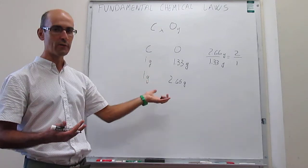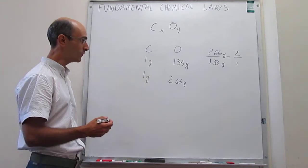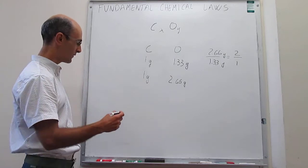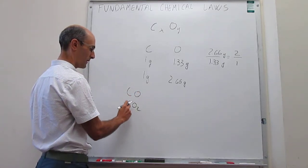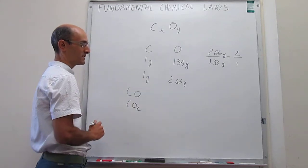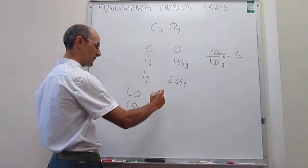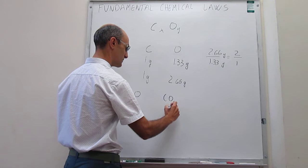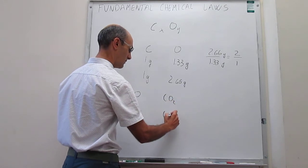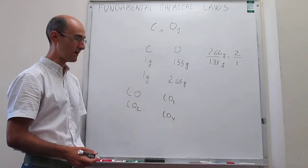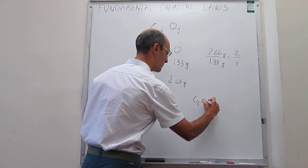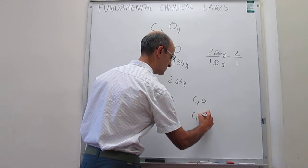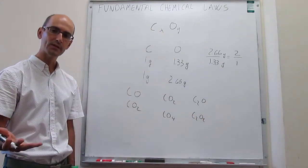So the question is, what are those compounds? Well, in principle, we actually don't know what those compounds could be. For example, they could be CO and CO2. That would actually agree with these found masses. But it could also be CO2 and CO4. That also agrees with these experimental observations, or it could be other combinations.